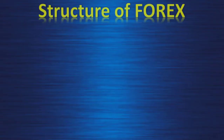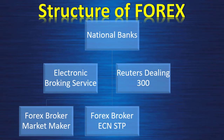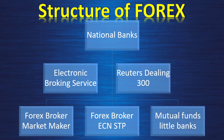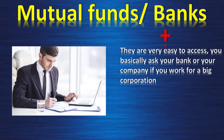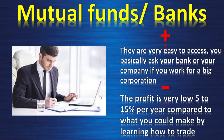Now let's come back to our structure. We have all those actors at the top, and now we will look at mutual funds and little banks. They are very easy to access — you basically ask your bank to trade for you or your company. Most of the time, if you are in a big corporation, they have a mutual fund department that will manage your money and make you a profit. The negative side is the profit is very low: 5 to 15 percent per year, compared to what you could make by learning how to trade yourself.